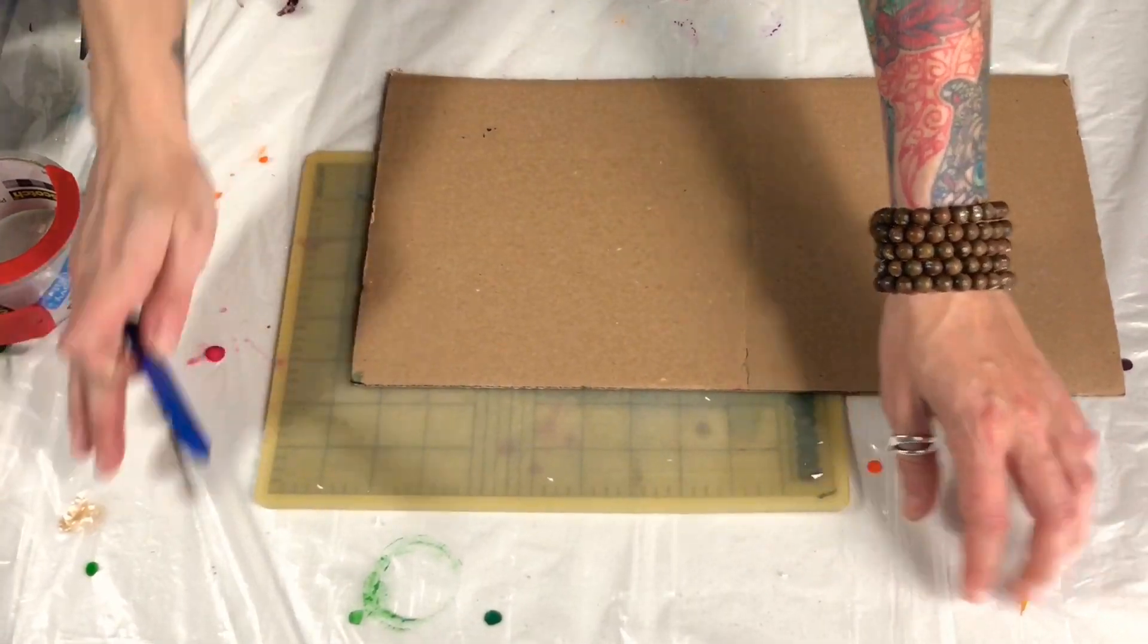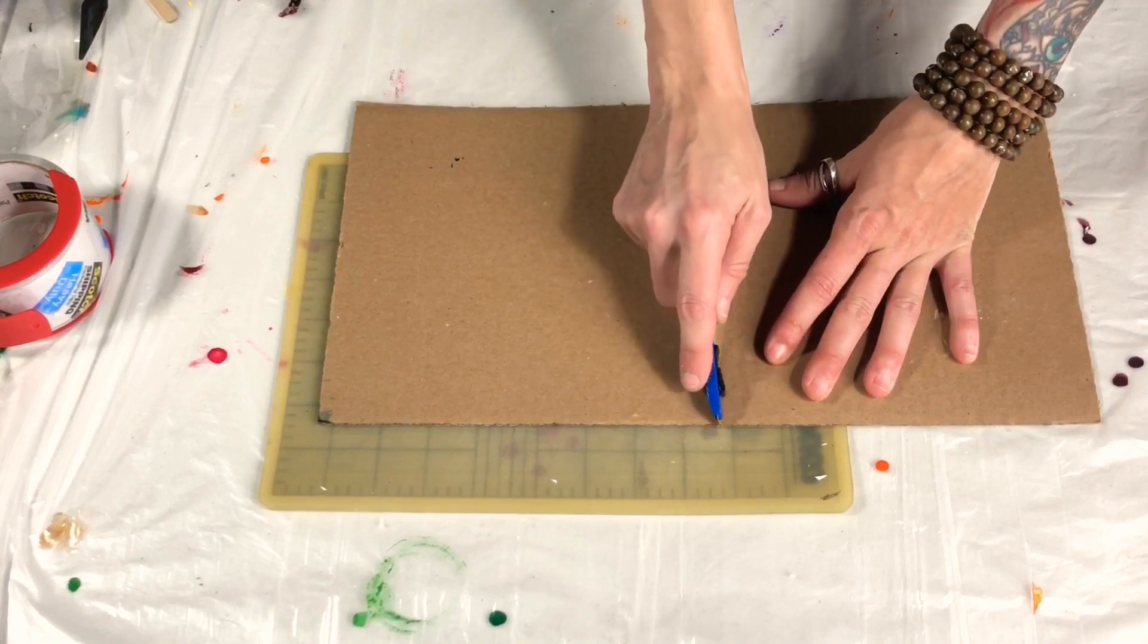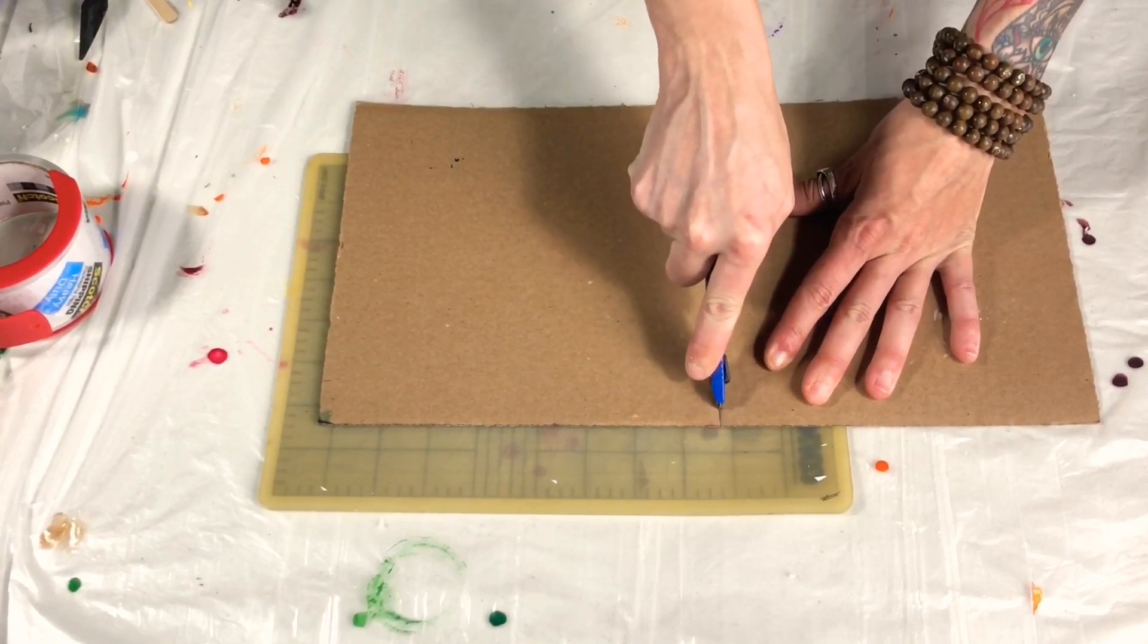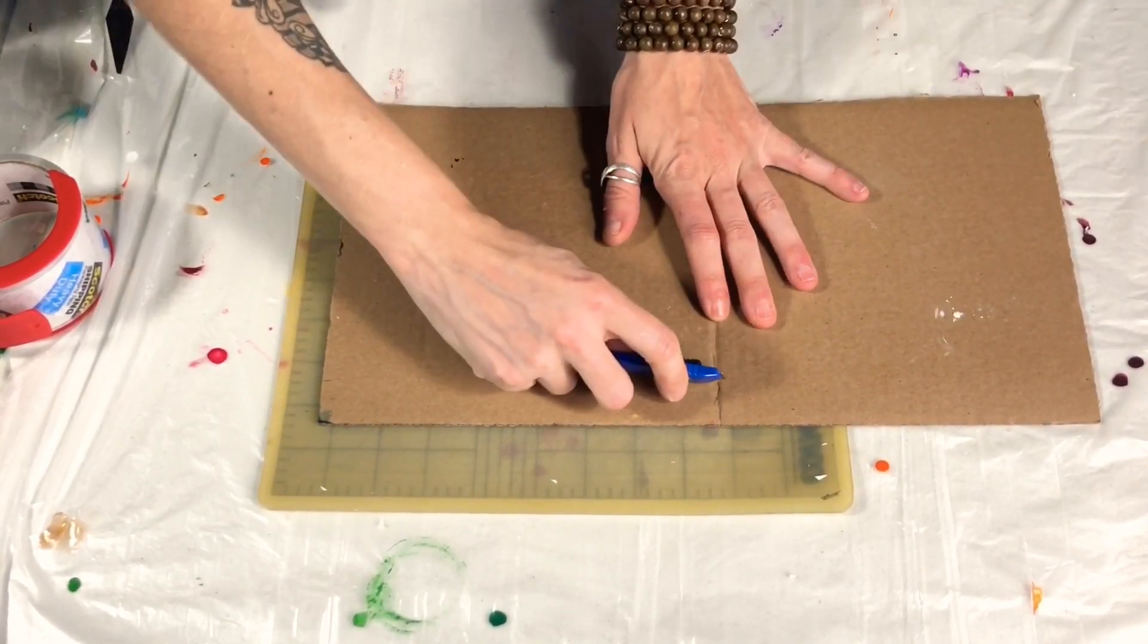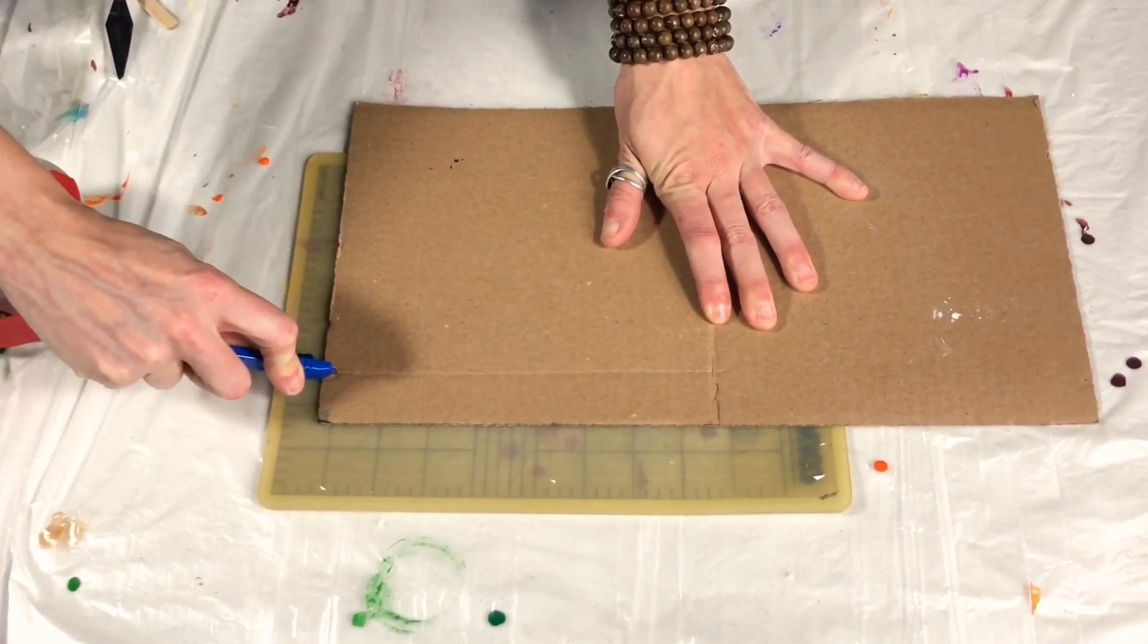According to how big your canvas is or the piece that you're pouring, that's how big you want to make it. But I don't measure, I just kind of cut a piece that's a long rectangle and that makes it easy to wrap around the corners.